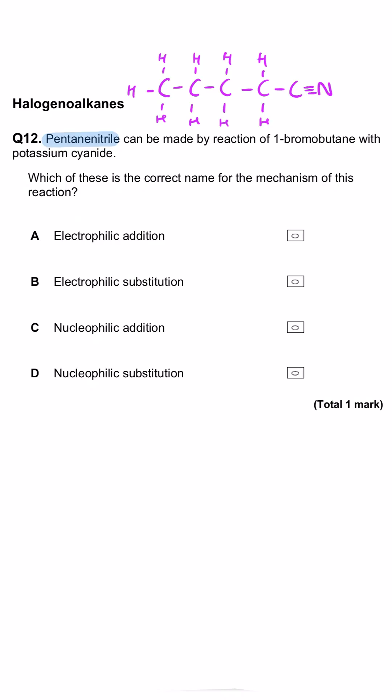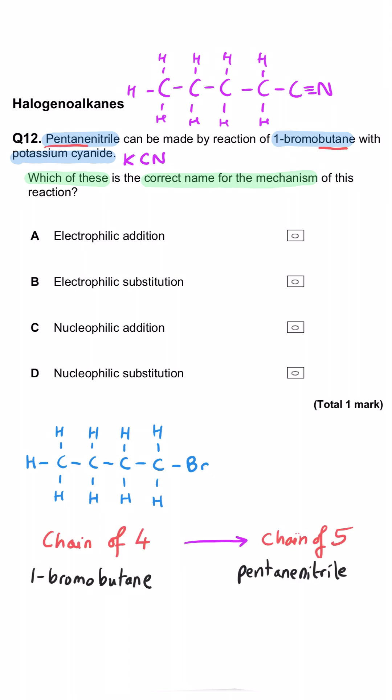Pentanenitrile can be made by reaction of 1-bromobutane with potassium cyanide. Which of these is the correct name for the mechanism of the reaction? We should note that we're turning bute into pent, which means we're lengthening our carbon chain.